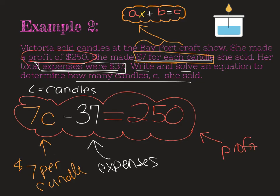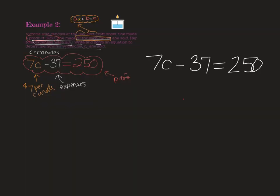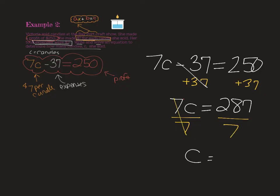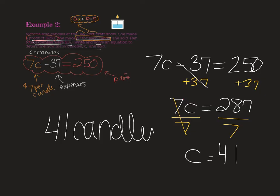So let's solve this equation to see how many candles Victoria sold. So I'm going to go ahead and add the $37 back on to both sides. And I will now have seven times C equals $287. That's what she would have made if she didn't have any expenses to pay for this, okay? And then the last thing we need to do there is divide by the cost per candle, which was $7 each to figure out how many candles she sold. So 287 divided by seven is 41. So she sold 41 candles at the craft show.